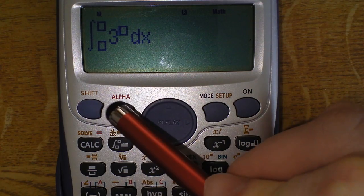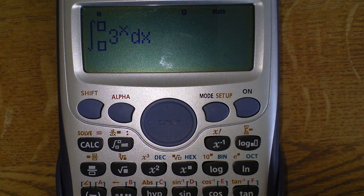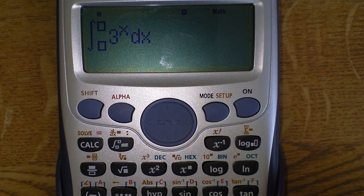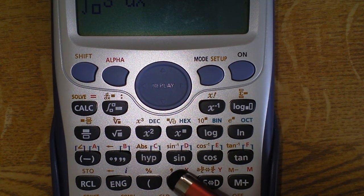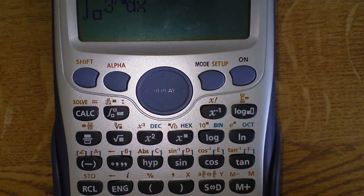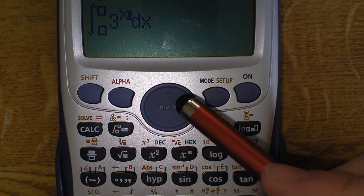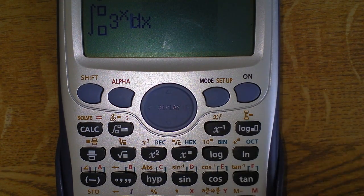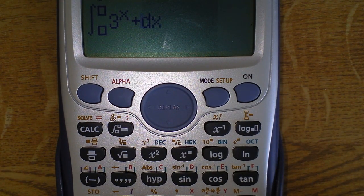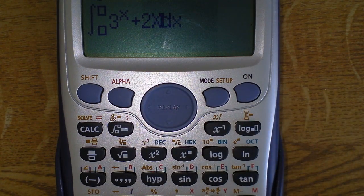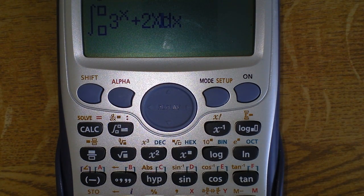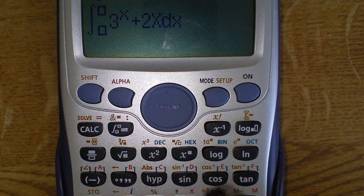To get x it was alpha and then the bracket button just here. Press the right arrow and then plus two and put our x in again. Now we need the limits, so to do that press the down arrow.